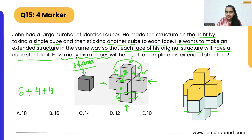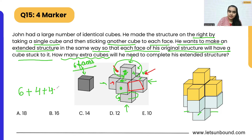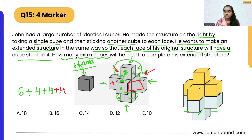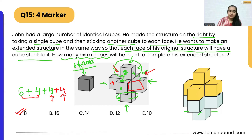The same applies to the remaining sides — one, two, the second cube here, third, and fourth — another four cubes. Adding it all up: 6 + 4 = 10, + 4 = 14, + 4 = 18. So the correct answer is option A: 18.